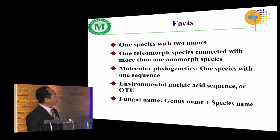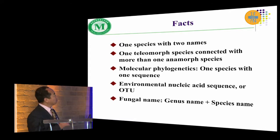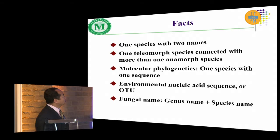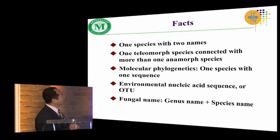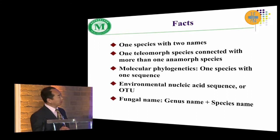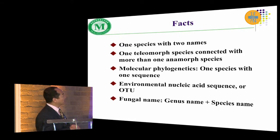Several years ago I asked my students to work on Orbilia with anamorphs and telemorphs collections. I had no idea about one fungus and one name, but now the facts are: one species with two names for the telemorph-anamorphic connections, one telemorph species connected with more than one anamorphic species, and we also have a lot of environmental nucleic acid sequences.